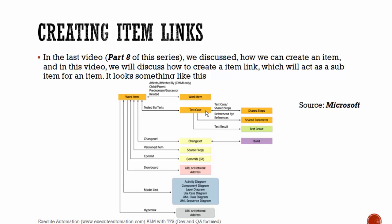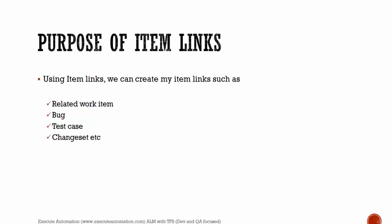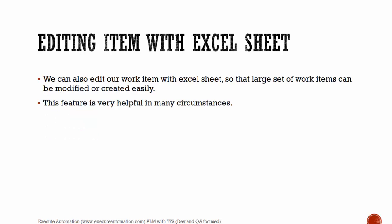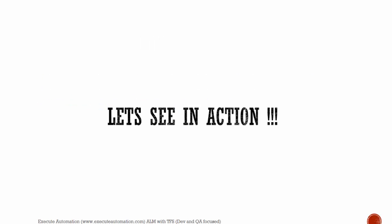You can read more about this from the Microsoft website. The purpose of item links is that we can create many types — related work items, bugs, test cases, changesets, etc. For a particular task or PBI we can create multiple child items to map work with other interdependent items. Editing items with an Excel sheet is also possible in Team Foundation Server, so large sets of work items can be modified and created easily. This feature is very helpful in many circumstances.